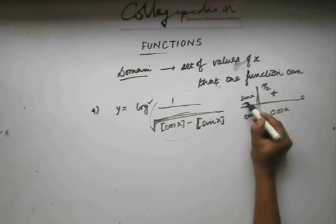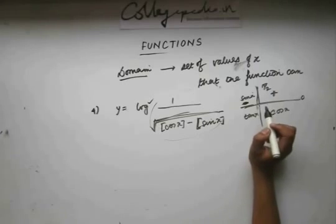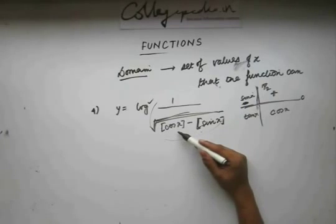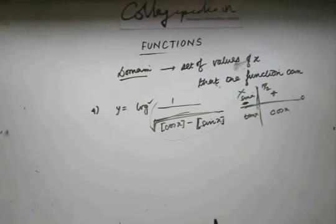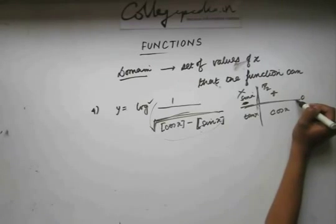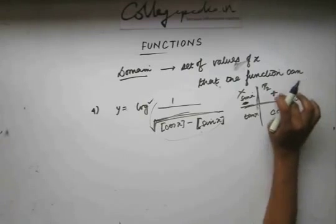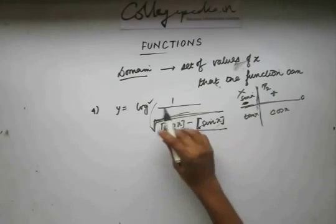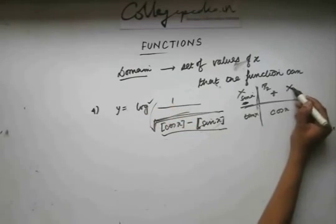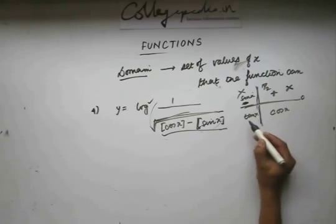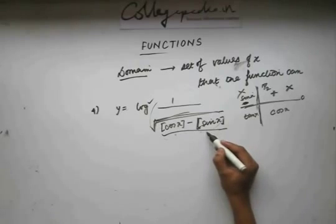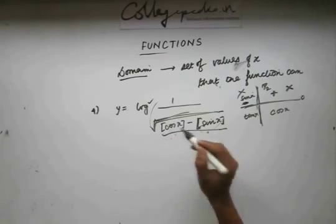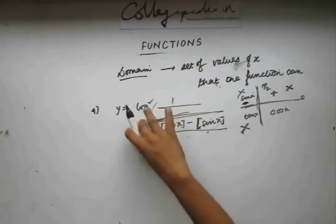If I take any value in the interval where sin x is positive, the floor of that will be 0, and cos x is negative, so the floor of that will be minus 1 — I can't take a value in this interval. If I take a value between 0 to pi by 2, both are positive, so they cancel and give a 0 term in the denominator — that's not allowed. If I take any value in the next interval, both are negative, giving floor of minus 1 and minus 1, which again cancel to give 0 in the denominator — also not valid.